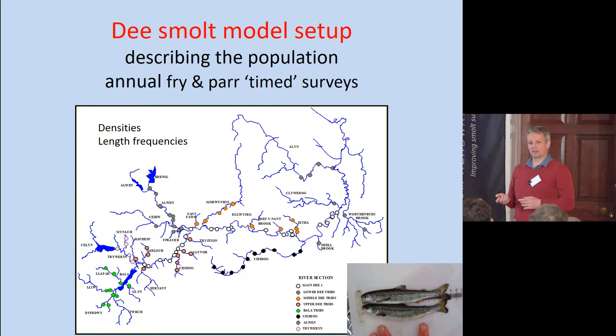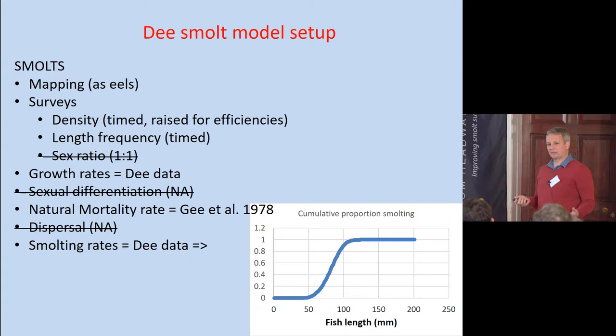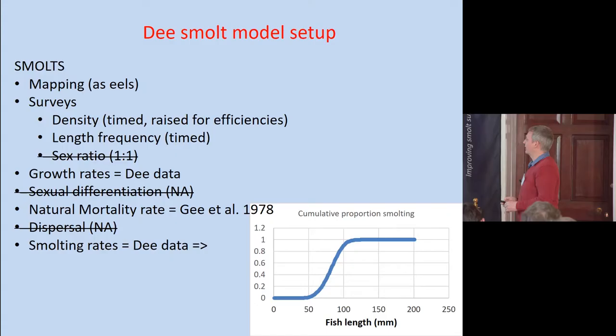So this is how we have it set up. Most of the data comes from the Dee itself. The natural mortality rate we've taken from the literature — and just like Steven was saying this morning about the relative lack of scientific evidence for some of these things we talk about with smolts, we found that there are very few studies reporting mortality rates from fry to smolts. There's plenty looking at smolts to adults, and even eggs to adults, but actually breaking it down into the bit that we want — which is fry to smolts — is quite rare. I'll come back to that as an area for later. And with smolting rates, we use the Dee data.